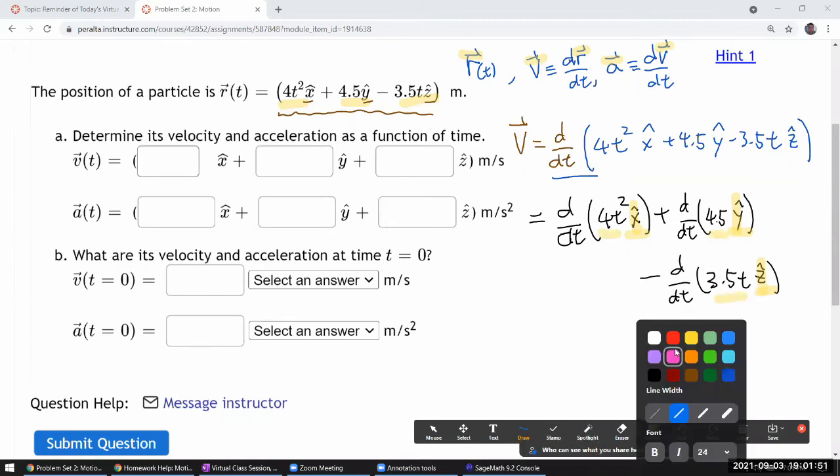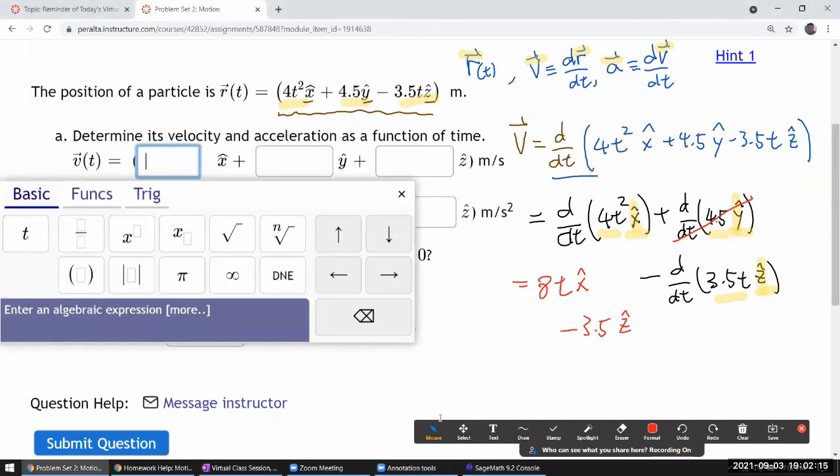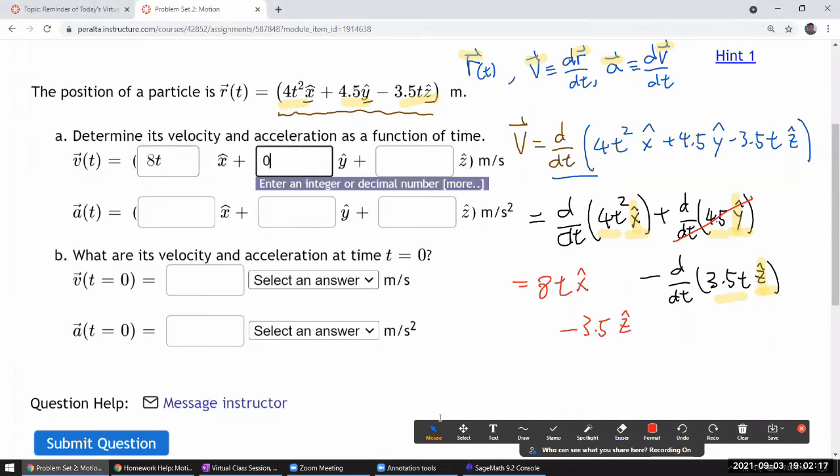One of the nice things I see, I see that this is constant, so the time derivative will be zero. So here, I take the time derivative. I get, so two comes down, so it's going to be 8t x hat. So here, so t becomes just one, so it'll be minus 3.5 z hat. Let me put in the answers here. 8t, zero, minus 3.5.